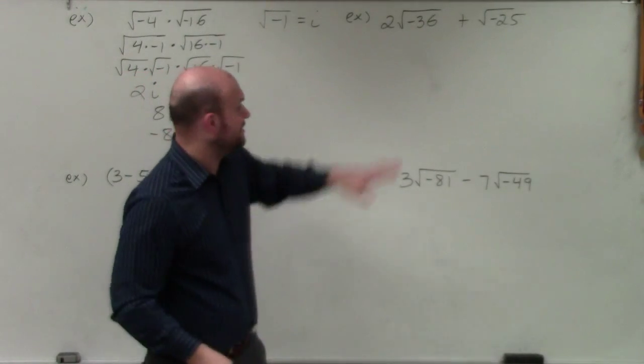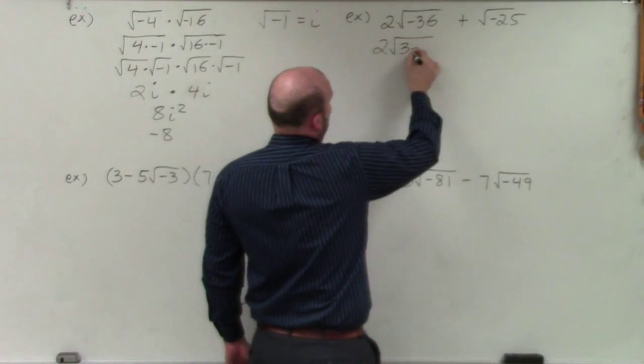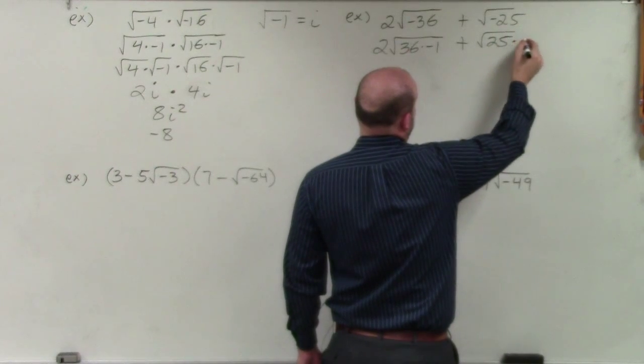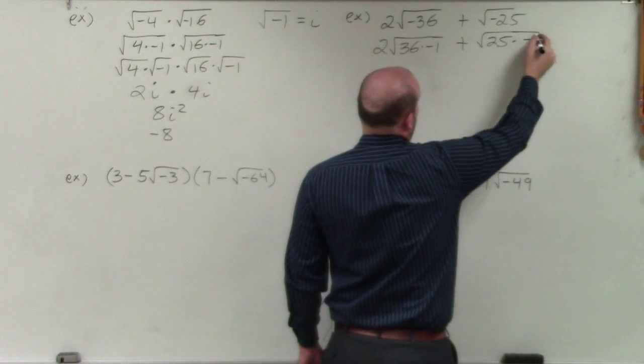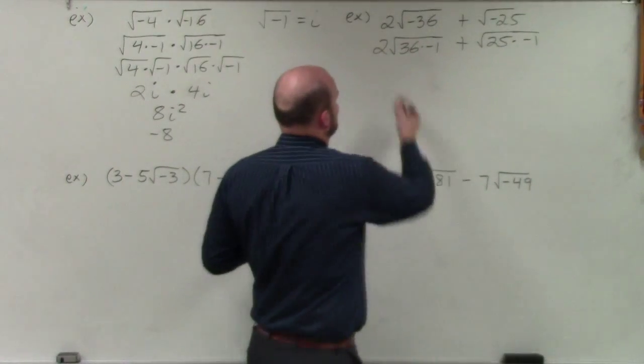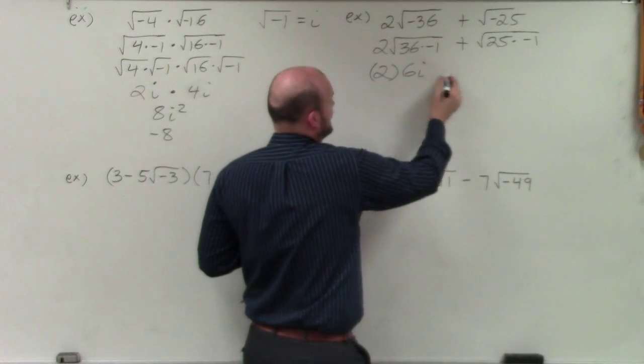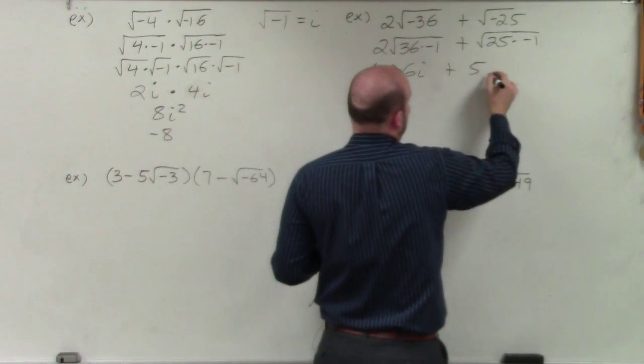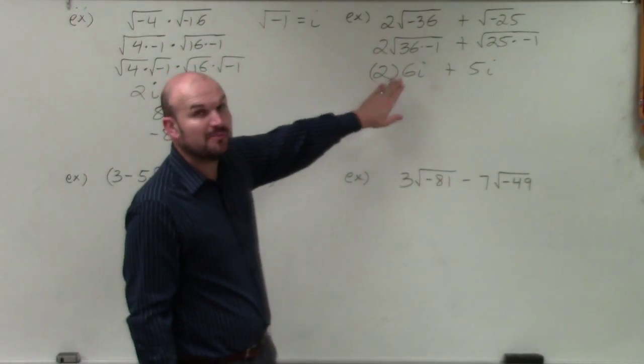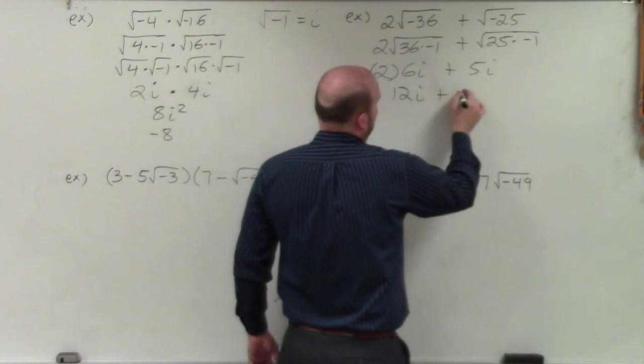In this example, we're going to do the exact same thing. I'll have 2 times the square root of 36 times negative 1, plus the square root of 25 times negative 1. I could break it apart like I did before, but you don't really have to do that. You can just know that it's going to be 2 times 6i plus 5i. When I'm multiplying 2 times 6i, that's going to give me 12i plus 5i.